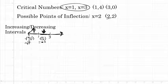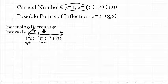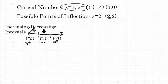Between 3 and infinity, I'll choose a value of 4. Substituting 4 into the first derivative gives positive 9. That tells me the function is increasing from 3 to infinity. Any number picked in the interval from 3 to infinity would give a positive number, confirming the function is increasing from 3 to infinity.